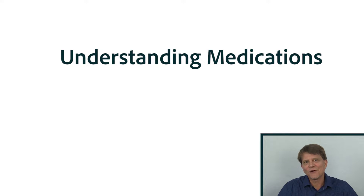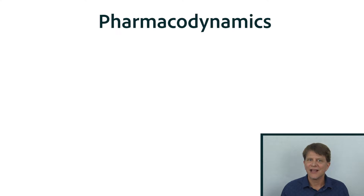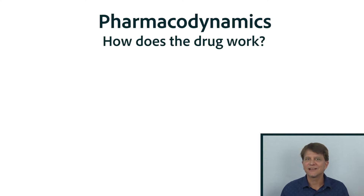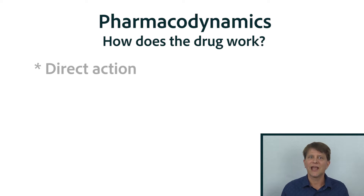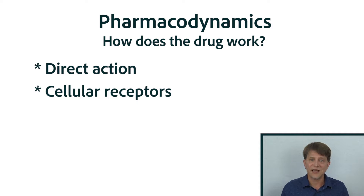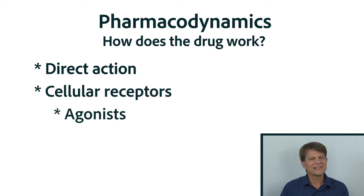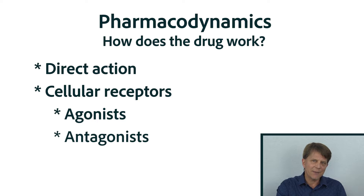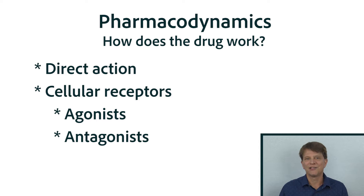Hi there and welcome back. So far we've already started understanding some of the principles of what we call pharmacodynamics — simply put, what the drug does to the body, basically how the drug works in the body. We've already taken a look at a few medications that work by direct action, and we've also learned that the majority of our medications work on cellular receptors, either as agonists doing the same thing as the natural substance would, or as antagonists blocking that receptor and preventing our natural substances from binding.